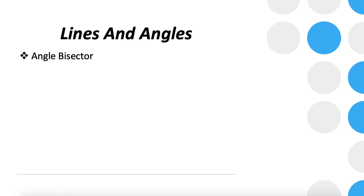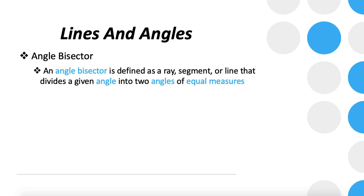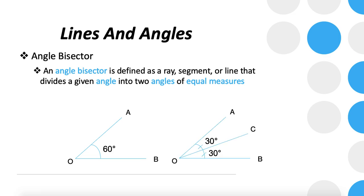The next thing is the angle bisector. Similar to a line bisector, the angle bisector divides an angle into two equal parts. For example, if angle AOB equals 60 degrees and we bisect it at O, we will have 30 degrees on both sides. So OC is the angle bisector of angle AOB.